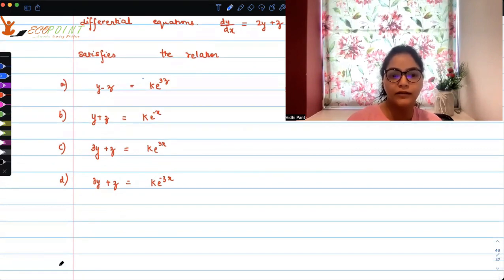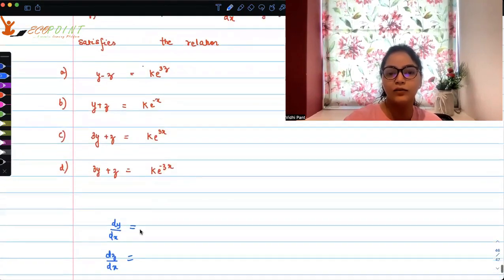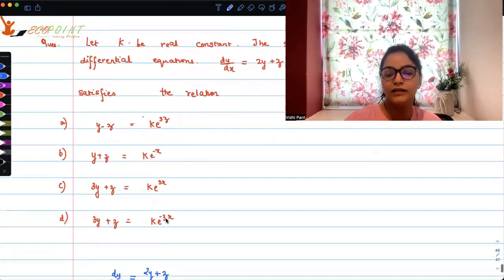So what is given to us? dy/dx and dz/dx, that is provided to us. So dy/dx is 2y plus z and dz/dx is 3y.